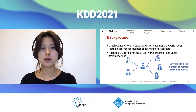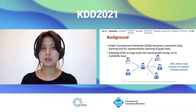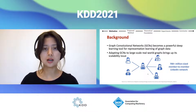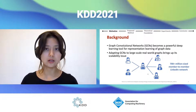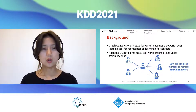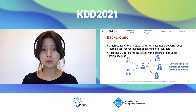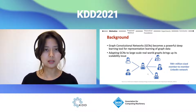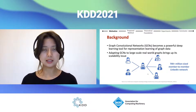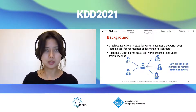Recently, Graph Convolution Networks have garnered huge attention across industry and academia as a powerful deep learning tool for representation learning of graph data. However, when we tried to apply GCN to large-scale real-world graphs, including the 700 million member-to-member LinkedIn network, we found out that it's not scalable enough.